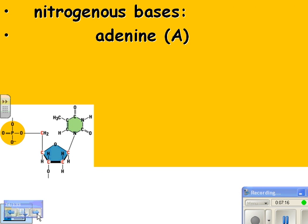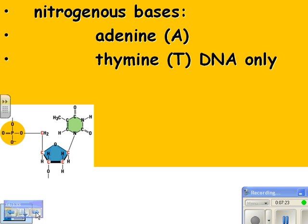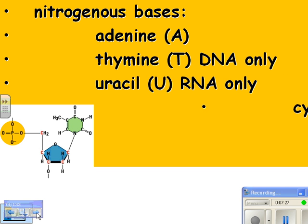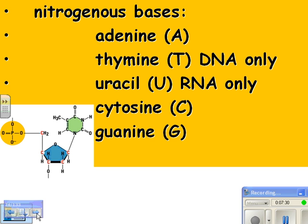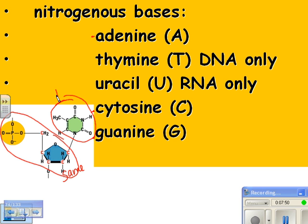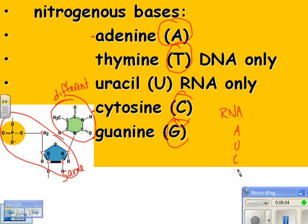The nitrogenous bases are: adenine, thymine — which is in DNA — uracil, which is in RNA, cytosine, and guanine. A, C, and G are in both DNA and RNA. Thymine is just in DNA, and uracil is just in RNA. The sugar and phosphate are the same in all nucleotides — that's the part that's different is the base. For DNA the base could be A, T, C, or G. For RNA it could be A, U, C, or G.